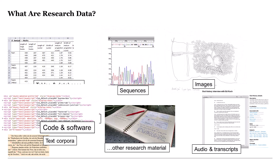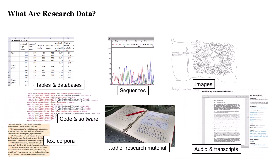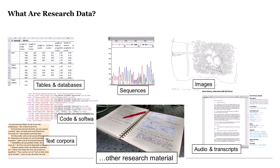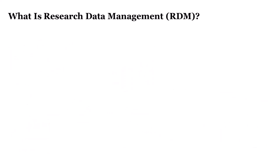Research data can also include codes, software and algorithms, audio and transcripts, protocols and text corpora, and methods and other useful materials related to the research project. Now we have an idea of what research data includes. This leads us to the question: what is research data management?